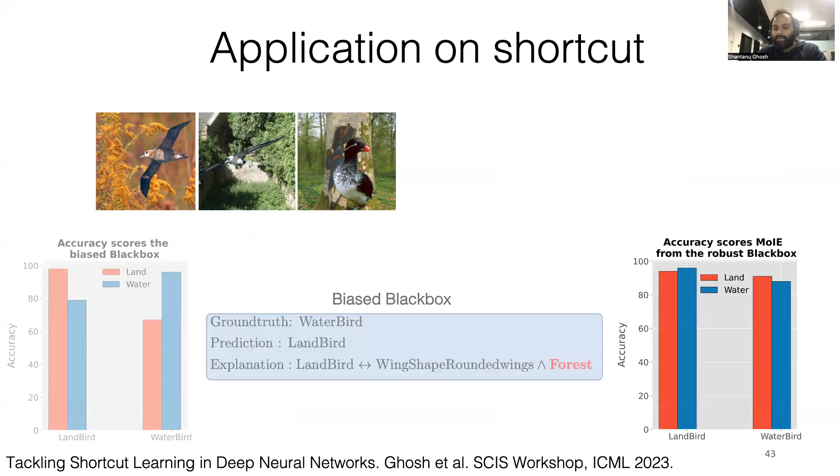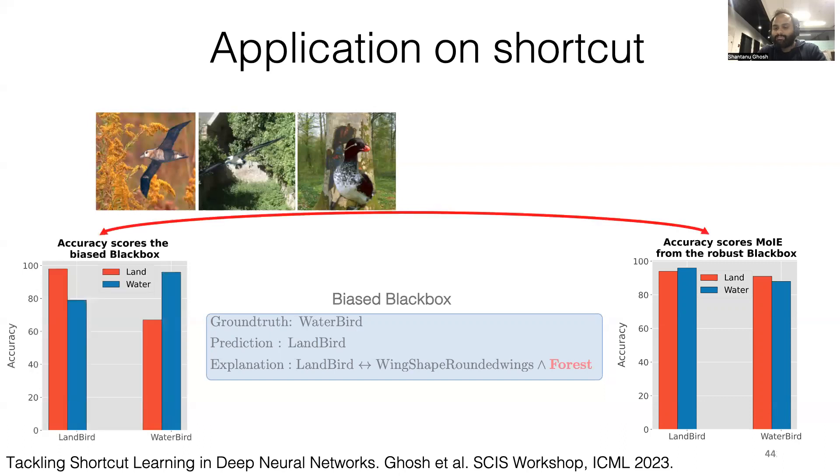Next, we eliminate the spurious concept from the encoding field using metadata normalization and extract our interpretable models again from the black box. As a result, we can see that our model achieves similar performance for water birds on water versus water birds on land.